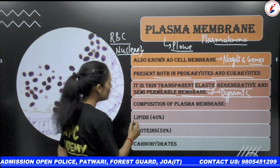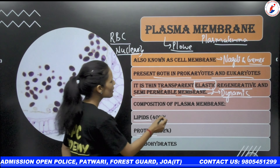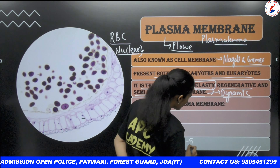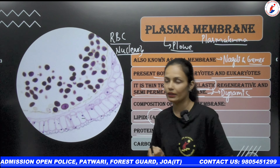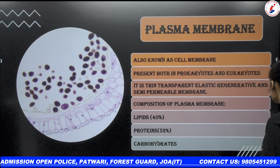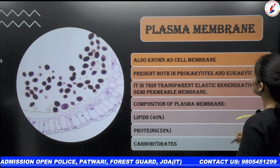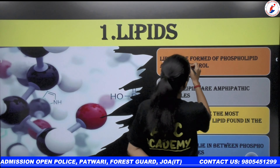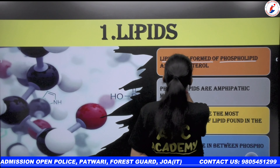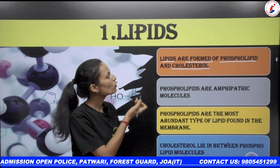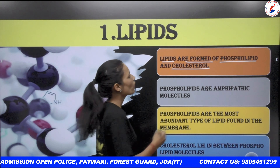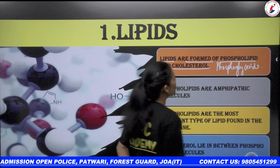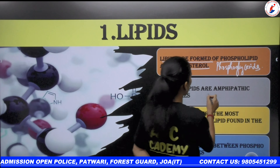In the case of RBCs, lipids are 40%, proteins are 52%, and carbohydrates are 1 to 5%, although their composition is variable. The first component is lipids, which are formed of phospholipids and cholesterol. Phospholipids, also known as phosphoglycerides, are present in lipids.